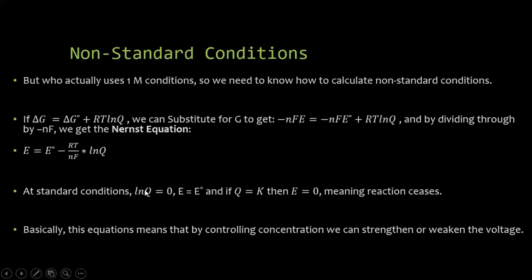Now at standard conditions, all the concentrations are 1, and so all the concentrations cancel out. Natural log of 1 is equal to 0, and so E-standard is equal to E-non-standard. So when Q is equal to K, then you actually get that RTNFLNK cancels out with E-standard, and then E-cell goes to 0. So basically saying a battery, if you let it run long enough, it will reach equilibrium. You let the battery run long enough without recharging, it will reach equilibrium, and then it essentially dies. You can get no voltage.